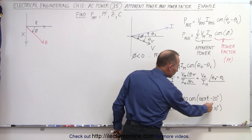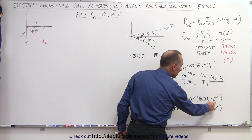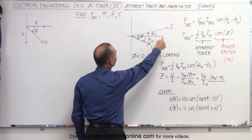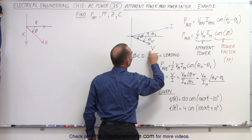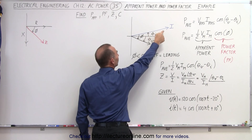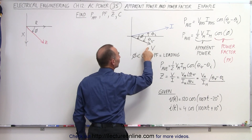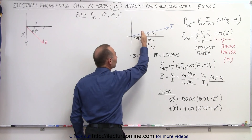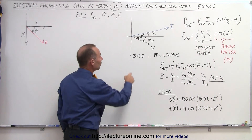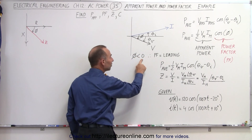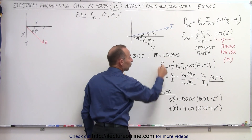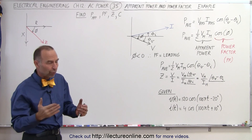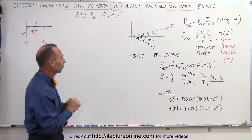Looking at the phase angles — minus 20° for voltage and plus 10° for current — we can draw a phasor diagram. The voltage phase angle is −20° and the current is +10°, so the phase angle θ_V − θ_I equals −30°. A negative phase angle indicates that the power factor must be leading, meaning the current is ahead of the voltage, which confirms there is capacitive reactance in the circuit.